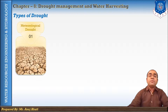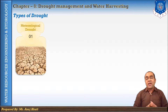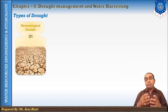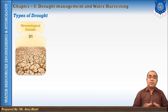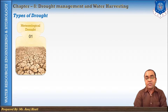A meteorological drought is expressed on the basis of degree of dryness in comparison to some normal or average amount and the duration of the dry period. It is about a prolonged period with less than average precipitation. This type of drought is generally defined by comparing the rainfall in a particular place and at a particular time with the average rainfall for that place. Meteorological drought leads to a depletion of soil moisture and impacts crop production.